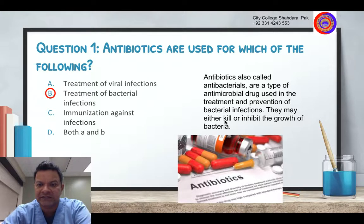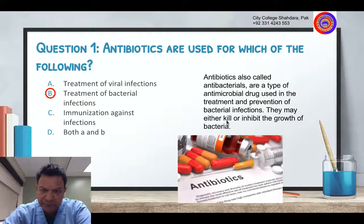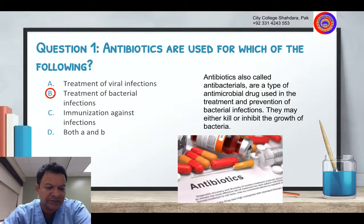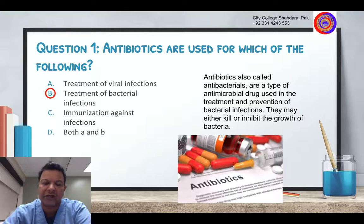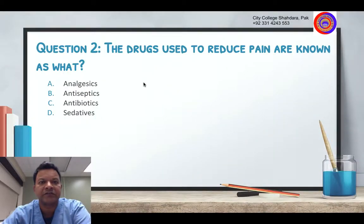Antibiotics may either kill the bacteria or inhibit the growth of bacteria. That is why there are two types of antibiotics: bacteriocidal or bacteriostatic, which stops their growth. Examples include typhoid fever, tonsillitis, and pneumonia — if these are caused by bacteria. Viral infections can cause similar types of diseases as well.